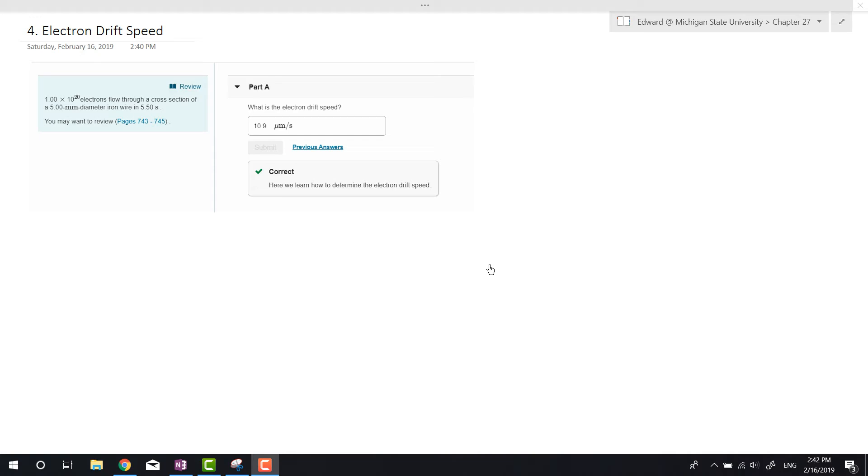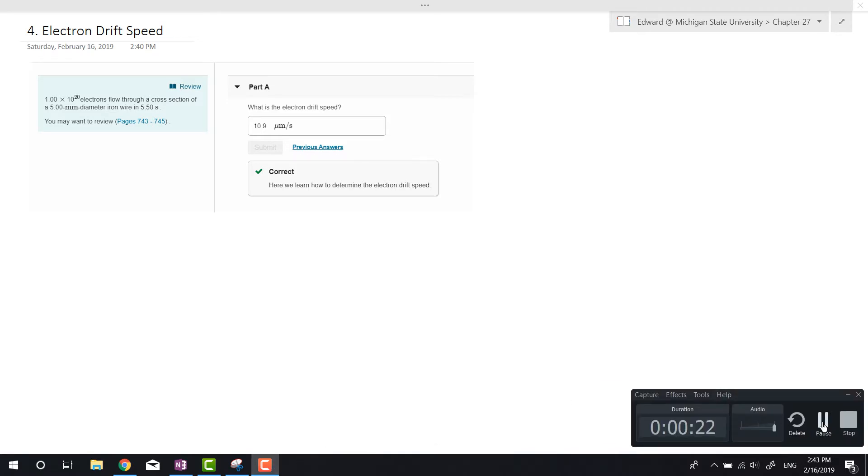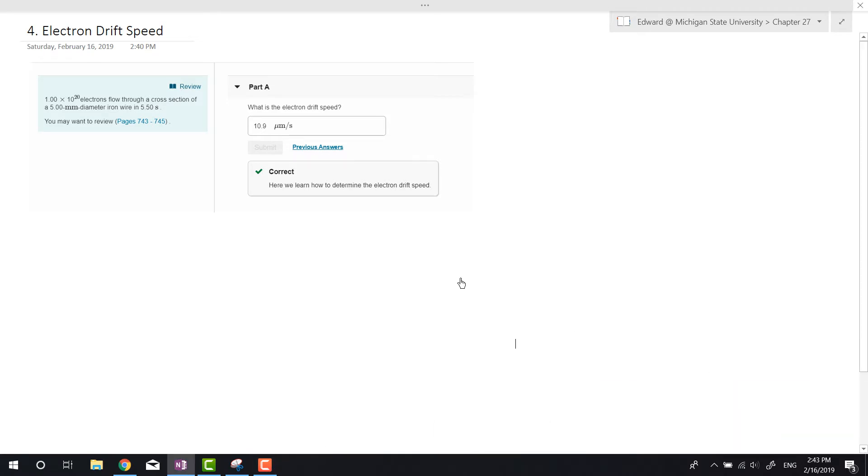Alright guys, some more physics 184, this is chapter 27, number four from Mastering Physics. We're given a problem here: 1 times 10 to the 20 electrons flow through a cross section of 5 millimeter diameter iron wire in 5.50 seconds. Let's go ahead and write down what we know.